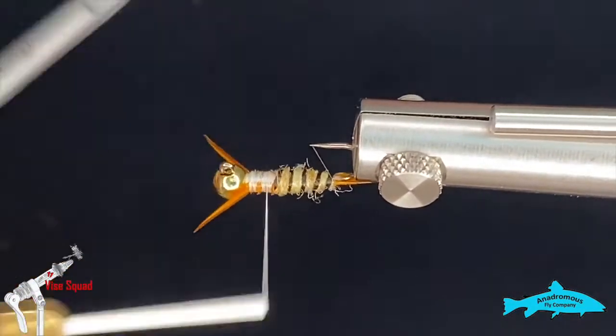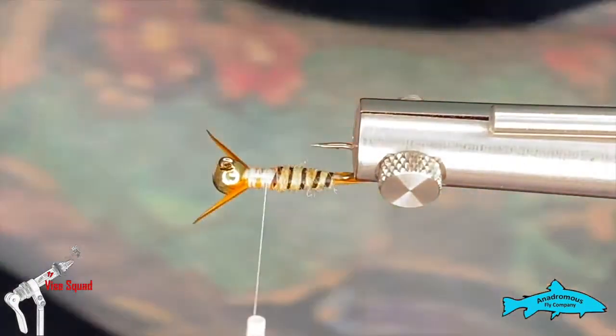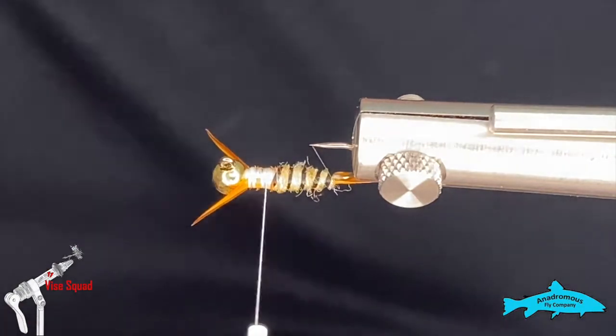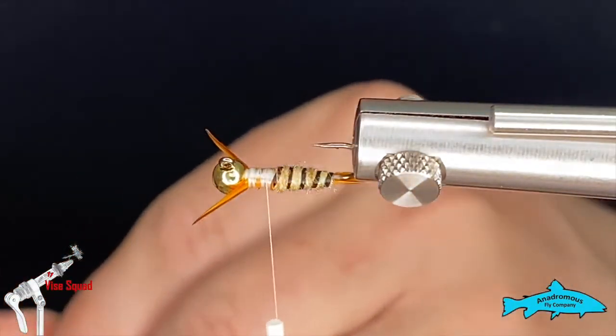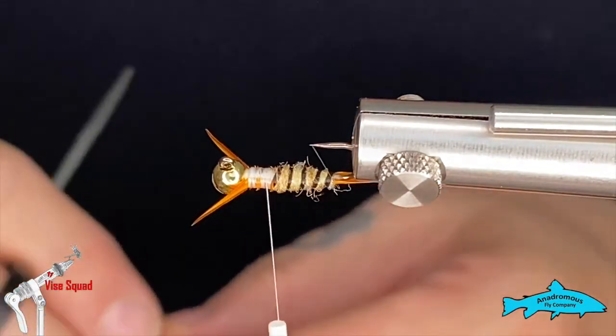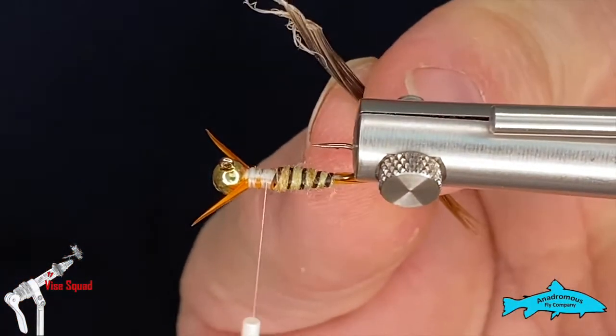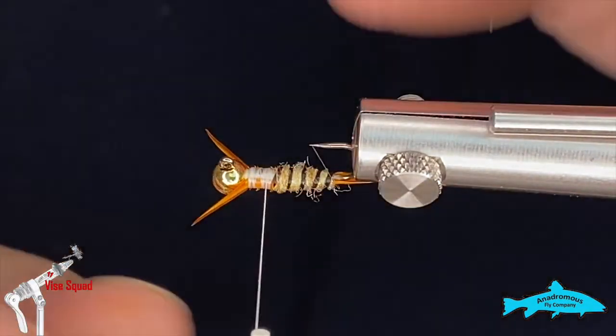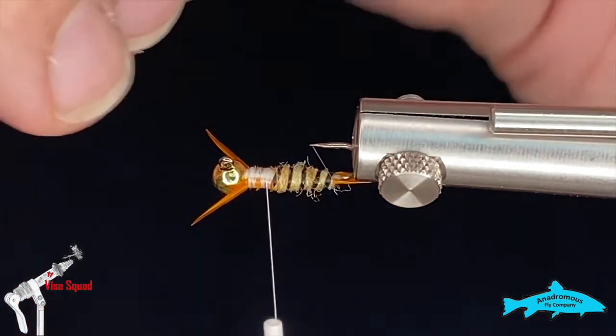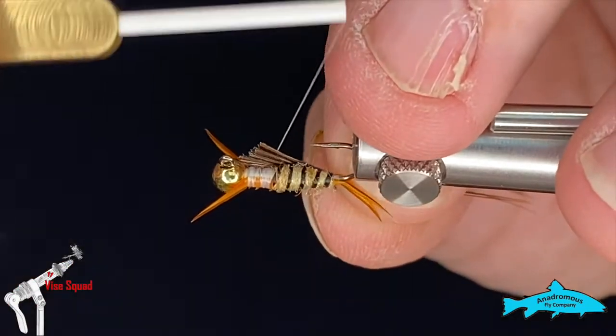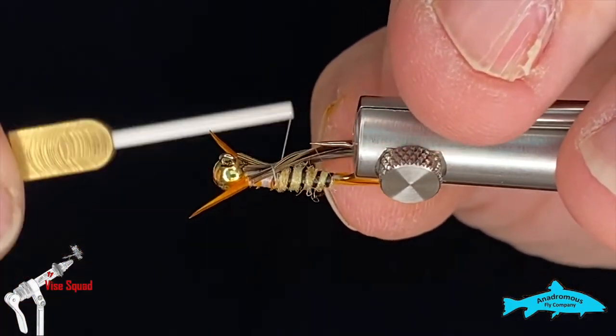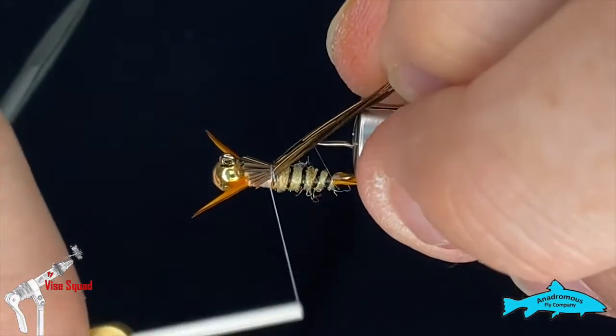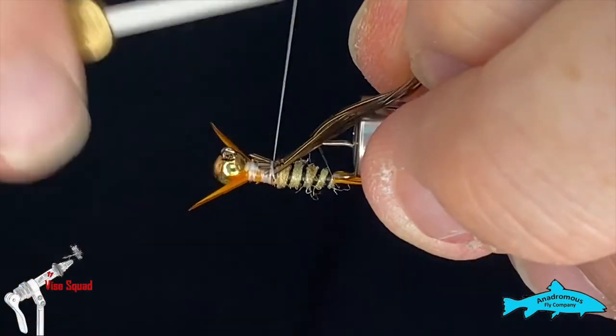All right, next I'm going to take some pheasant tail and I'm going to peel off ten or twelve fibers right off the side. Usually we line the tips up, but what I'm going to do is I'm going to take all this junk on the back end and I'm just going to snip it off because I want a heavier case on the back. So if you use the back end of those feather barbels, it'll be thicker than it would be if I use the tips. So I'll just tie that on like so.